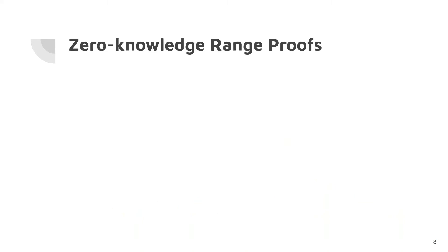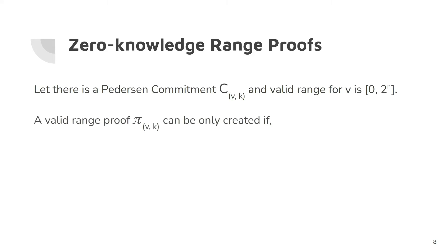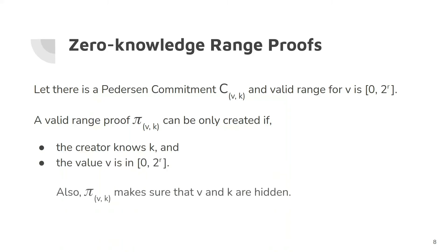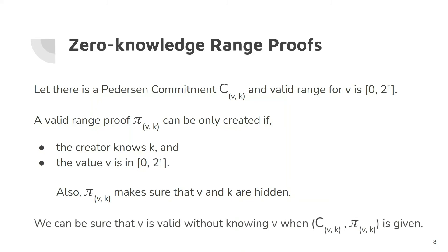Now we know that Pedersen commitments are perfectly hiding, but for cash systems, we need to know that the hidden cash amount is not negative. For that, we need zero-knowledge range proofs. A valid range proof can only be created if the creator knows the secret signing key of the Pedersen commitment and the value is in the valid range. Also, range proofs hide the value v and the secret key k. Therefore, once we are given a Pedersen commitment with a zero-knowledge range proof, we can make sure that the hidden value of the commitment is in the valid range — for example, it's not negative.